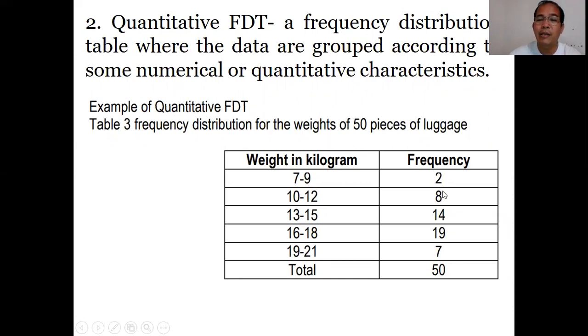This is the frequency. The 2 means there are 2 pieces of luggage weighing from 7 to 9 kilograms. And there are 8 pieces of luggage from 10 to 12 kilograms. Adding all of this, the total is 50 pieces of luggage. This example is for Quantitative Frequency Distribution table.